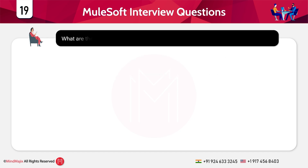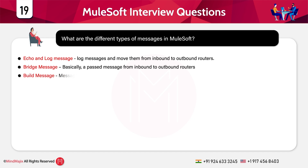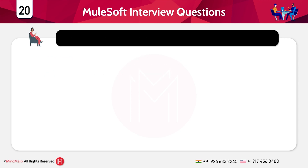What are the different types of messages in MuleSoft? The first type is the echo and log message — log messages and move them from inbound to outbound routers. The second type is bridge message, which passes a message from inbound to outbound routers. The third type is build message, which are messages created from fixed or dynamic values.